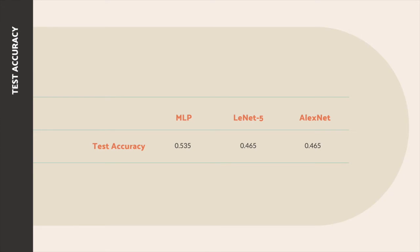Here is the test accuracy for the three networks. The test accuracy for MLP is 53.5%, for LeNet is 46.5%, and for AlexNet is also 46.5%. Therefore, the multilayer perceptron model yields the best results.